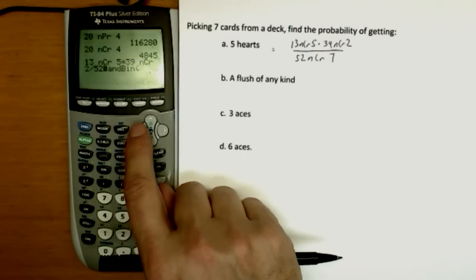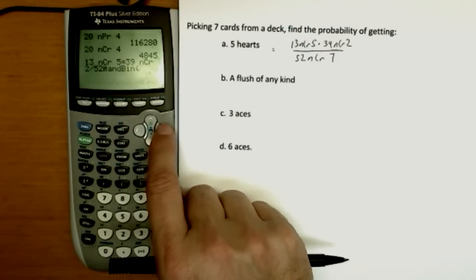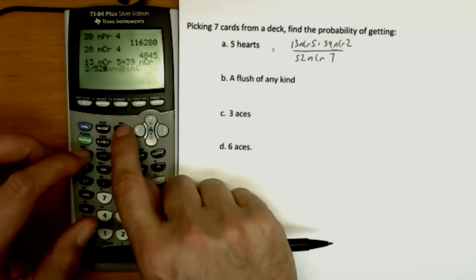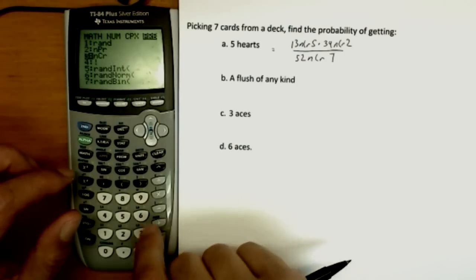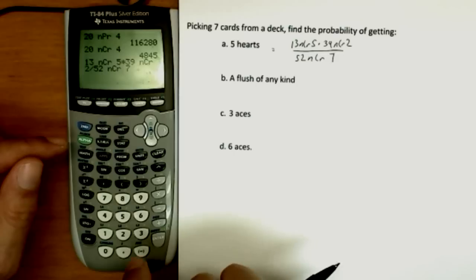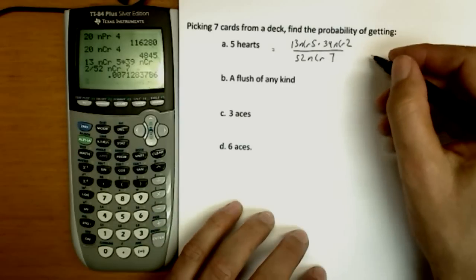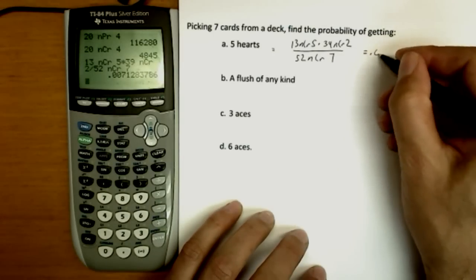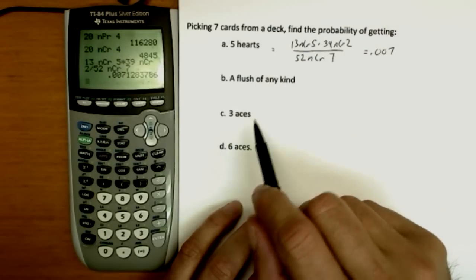I typed something wrong here, didn't I? I hit the wrong button. Delete that part. Math, probability, NCR. And seven on the bottom. There we go. So now the calculator is showing precisely what I want. And I hit enter, and I get a probability of .007. Seven times out of a thousand, you'll get exactly five hearts.